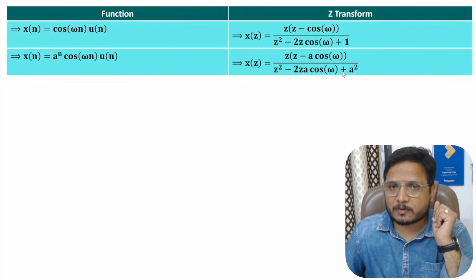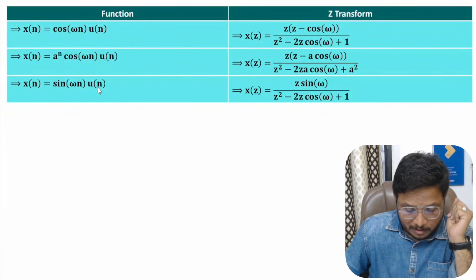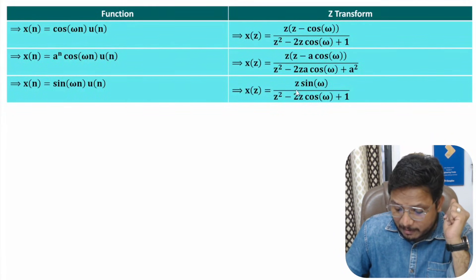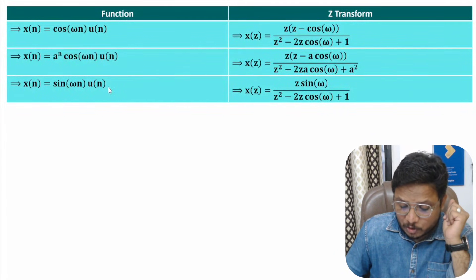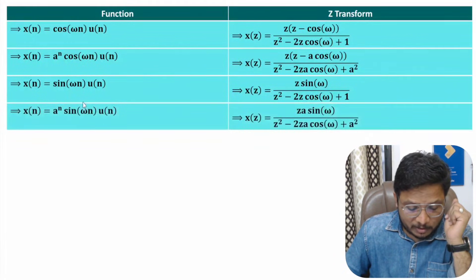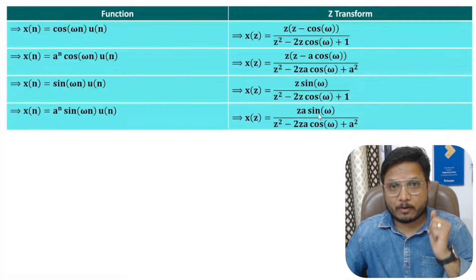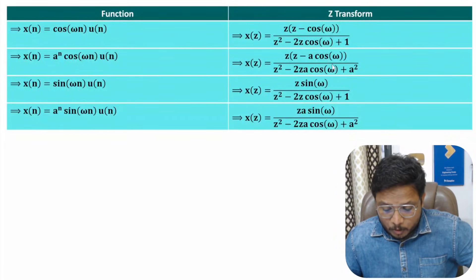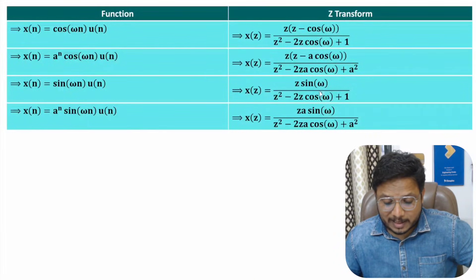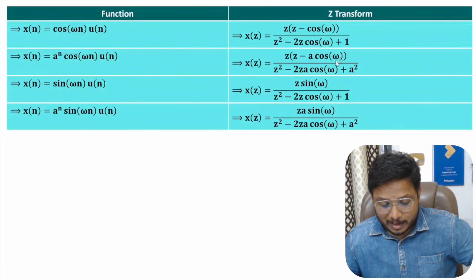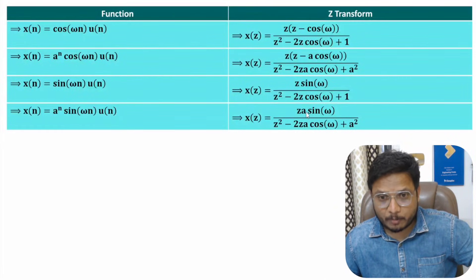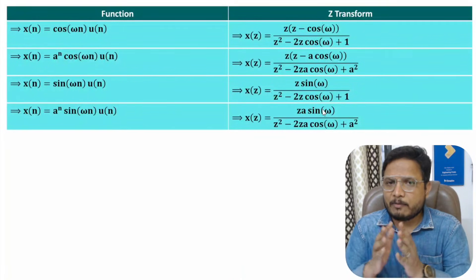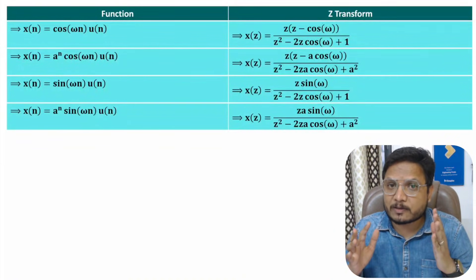Now let me explain the sine function. For sin(ω)·U(n), the Z-transform is Z·sin ω divided by (Z² minus 2Z·cos ω plus 1). For Aⁿ·sin(ω)·U(n), it becomes Z·A·sin ω divided by (Z² minus 2Z·A·cos ω plus A²). The denominator is the same for both sine and cosine functions — only the numerator changes. We will be using these equations in future videos to solve problems based on Z-transform.